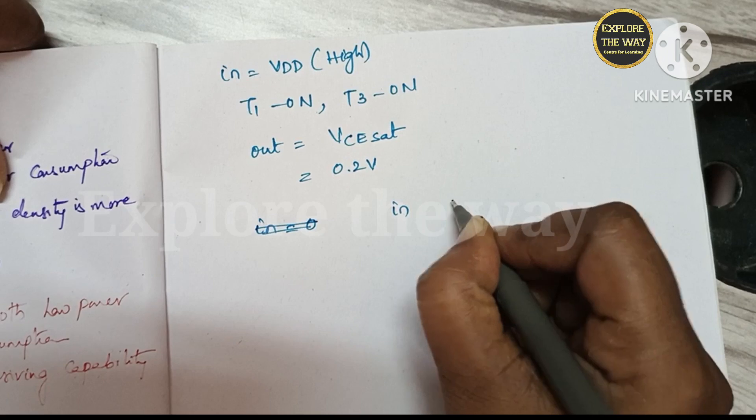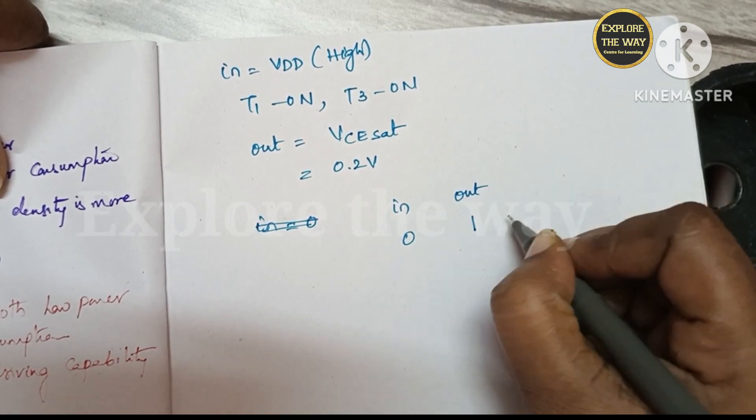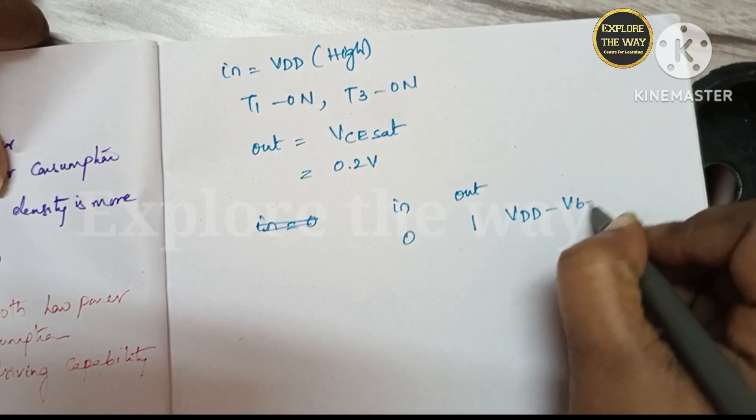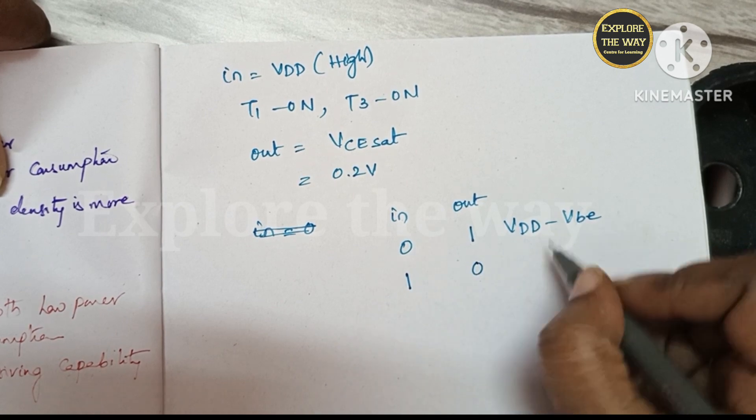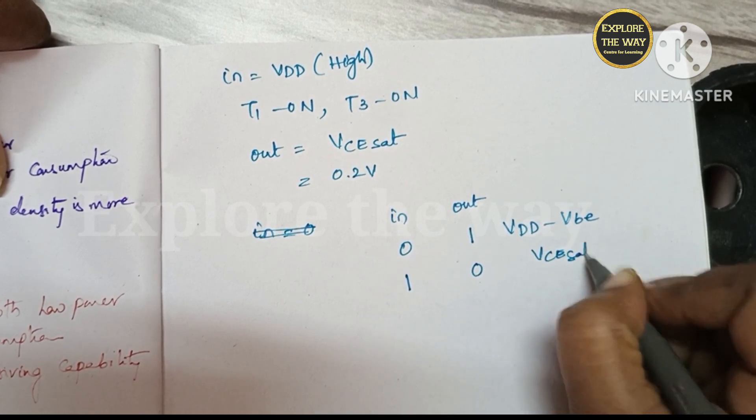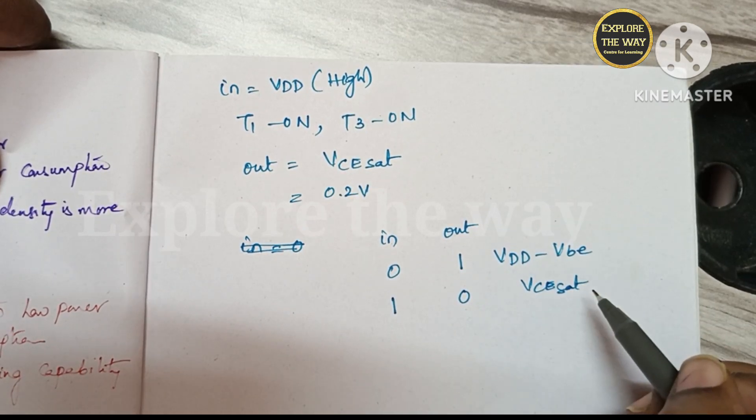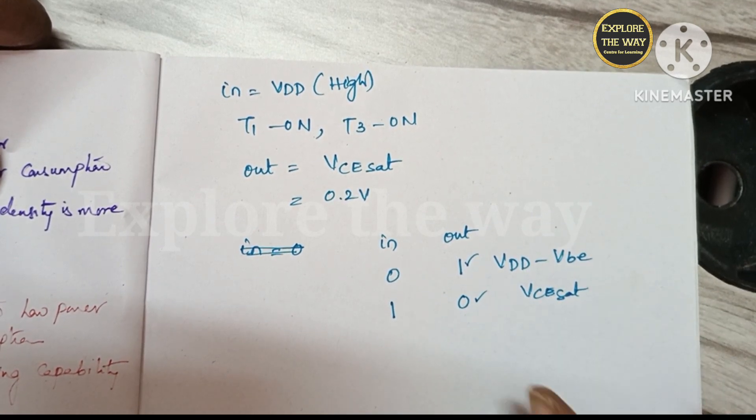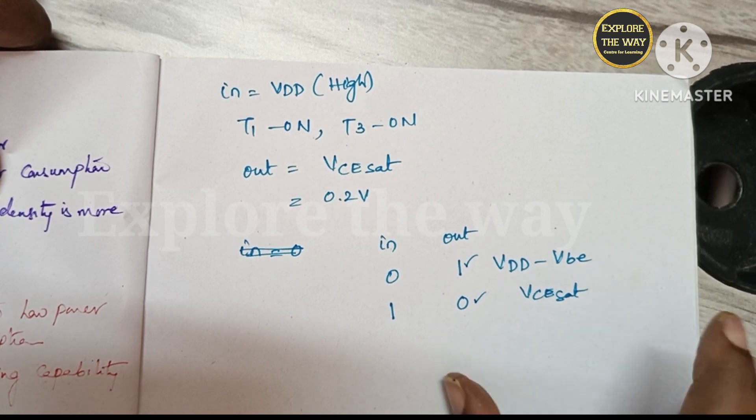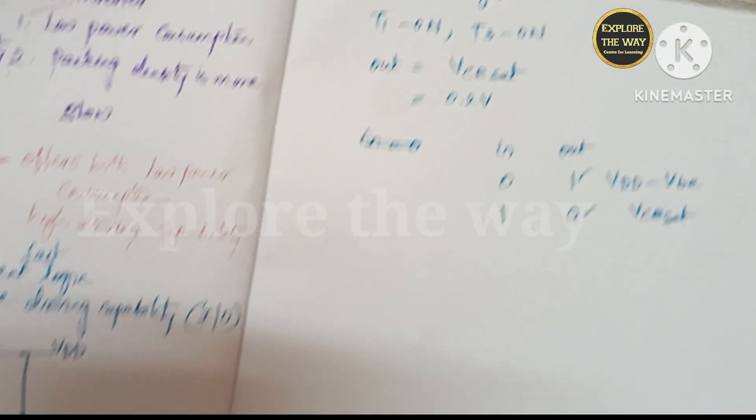When the input is 0, output is logically 1, but its value is VDD minus 1 VBE. And when the input is 1, output is logically 0, and its value is VCE sat. So in both the cases, it satisfies good logic levels. Its values are also close to supply rails, but not exactly VDD and ground. This is the BiCMOS inverter, but it has some drawbacks.